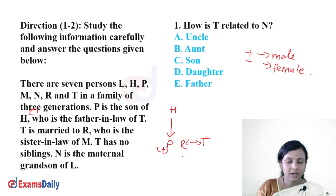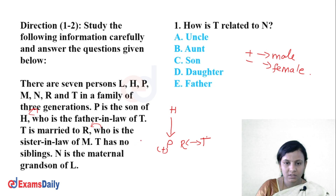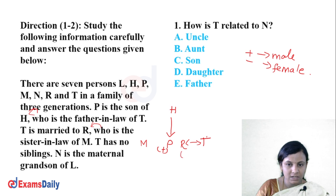Next, T is married to R, so T and R are a couple. Now the question asks: who is the sister-in-law of M? R is the sister-in-law of M.